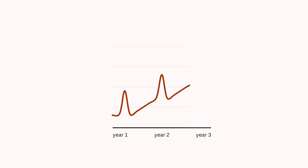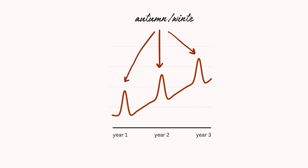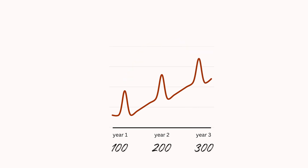The peaks are our autumn and winter months. In year one we sell a total of 100 pumpkin spice lattes, in year two we sell 200, and in year three we sell 300.